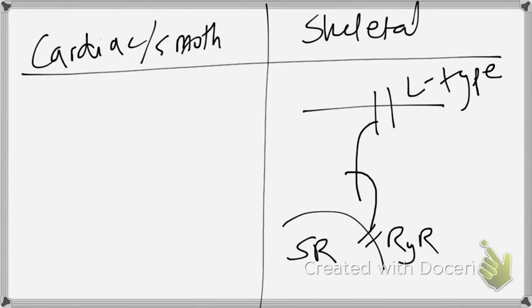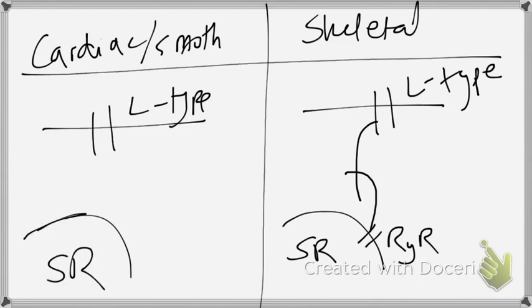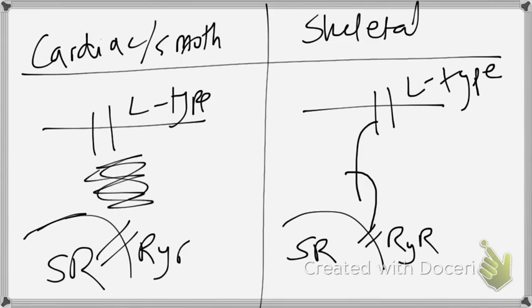It's not like they're separate from each other. So whereas in a cardiovascular smooth muscle, we had this L-type channel and in the sarcoplasmic reticulum, we had the RYR receptor, there was an empty space in between them.